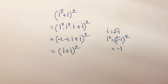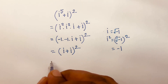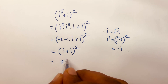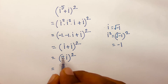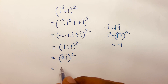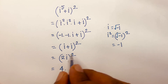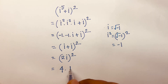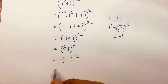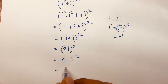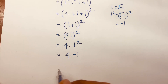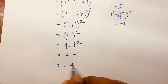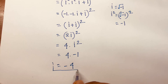i plus i equals 2i, so we have (2i) to the power 2. That gives us 2 squared times i squared, which is 4 times i squared. Since i squared equals negative 1, we get 4 times negative 1, which equals negative 4. This is our final answer.